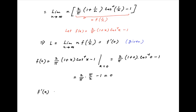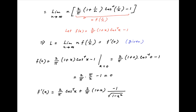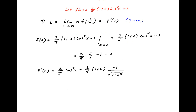Now the value of the limit L is equal to f dash 0. To determine f dash 0, we first determine f dash x. f dash x is equal to 2 upon pi times cos inverse x times the derivative of 1 plus x, which is 1, plus 2 upon pi times 1 plus x times the derivative of cos inverse x, which is minus 1 upon root of 1 minus x squared, minus the derivative of 1, which is 0.